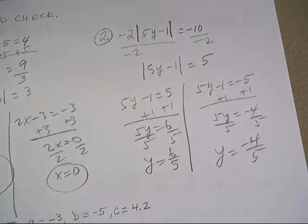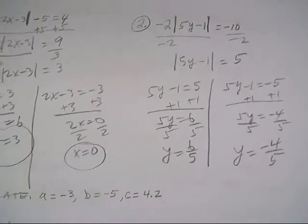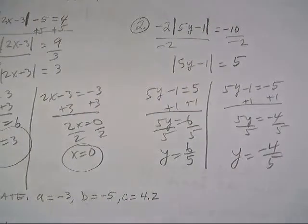And y is negative 4 fifths. Very good, and that's good on 2 — we'll be back.